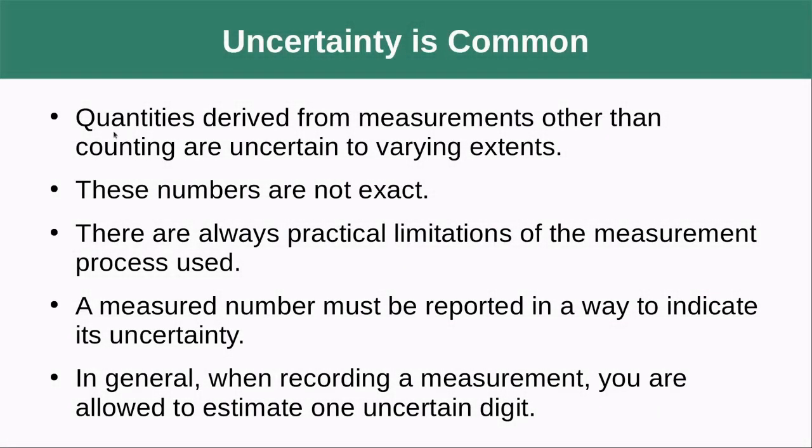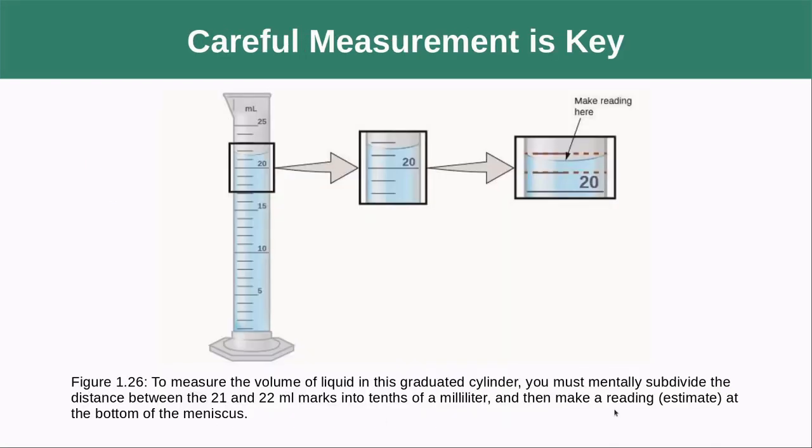Uncertainty is a common thing. Quantities derived from measurements other than counting are uncertain to varying extents. These numbers are not exact. There are always practical limitations of the measurement processes that we use. A measured number must be reported in a way to indicate its uncertainty. In general, when recording a measurement, you are allowed to estimate one uncertain digit. So let's see what that means.